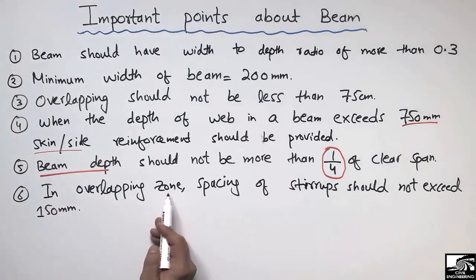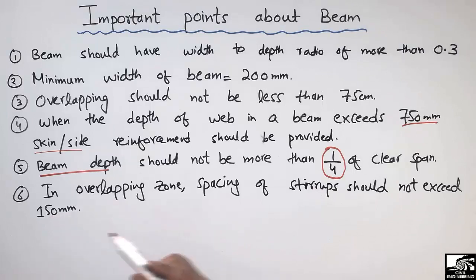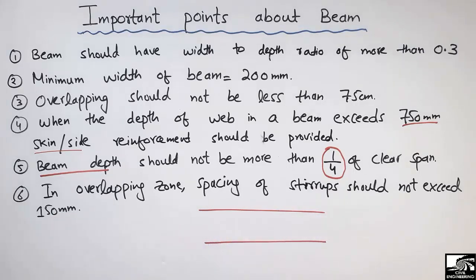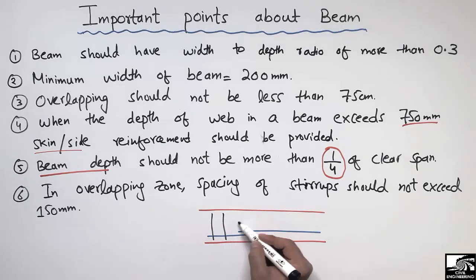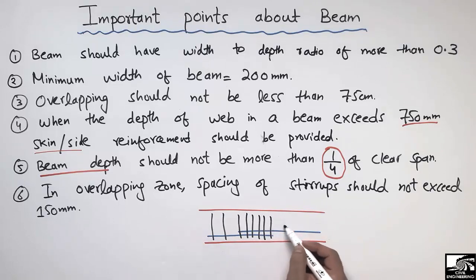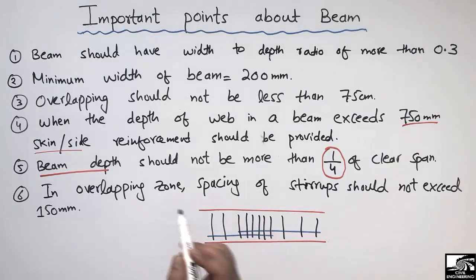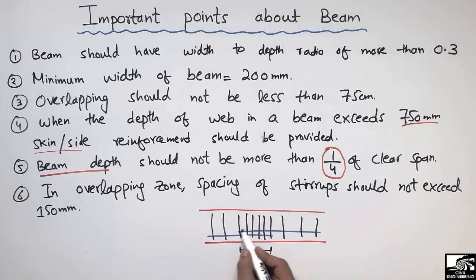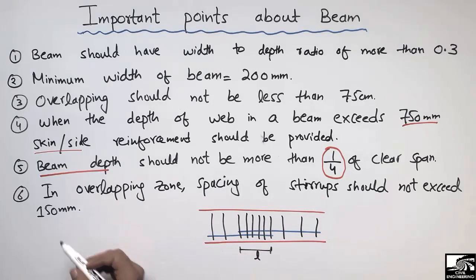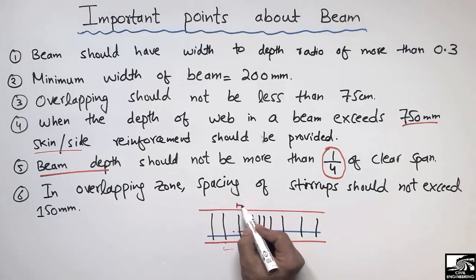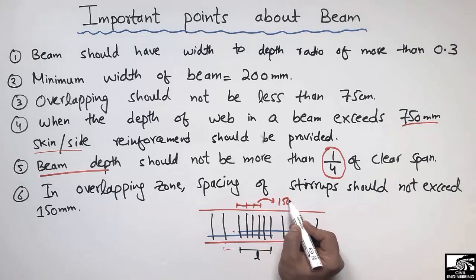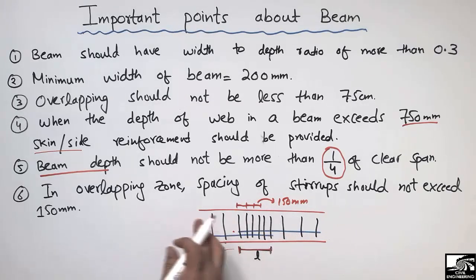The sixth important point states that in the overlapping zone, the spacing of stirrups should not exceed 150mm. In the overlapping zone of the beam where steel bars overlap, the stirrups must always be closed. The spacing of these stirrups should not exceed 150mm — it should always be less than 150mm in the overlapping zone. This is the special stirrup spacing requirement for the overlapping zone.